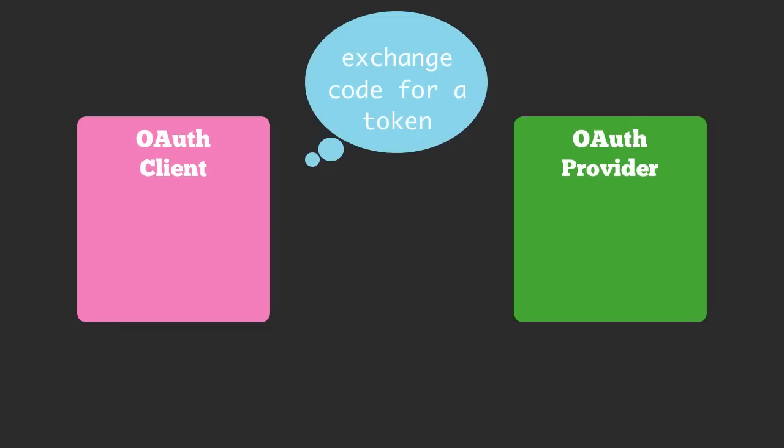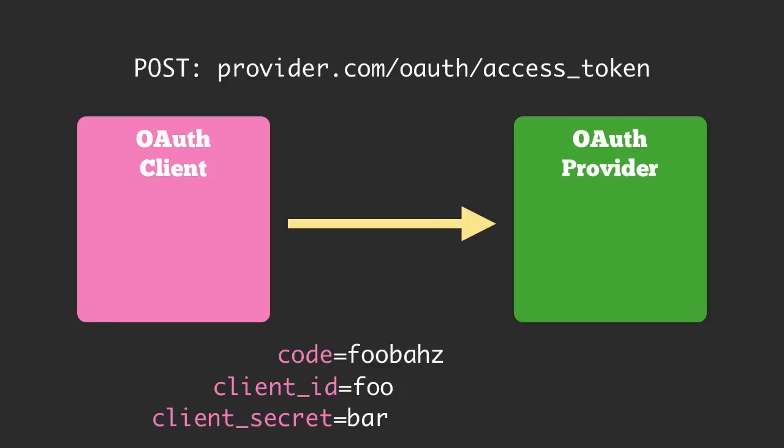The OAuth client then will take that code and issue a POST to the OAuth provider at a given URL. It will include the code as well as the client ID and the client secret that we got previously. This is so that the OAuth provider knows that no one is faking being the OAuth client.